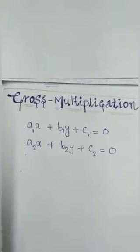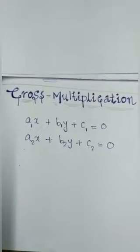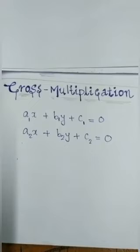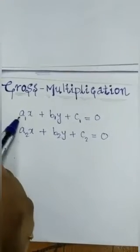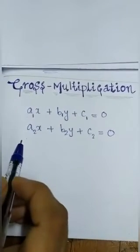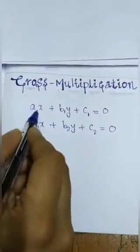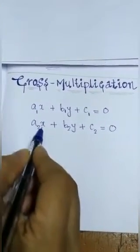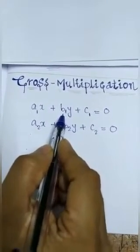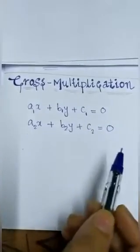Let's discuss the cross multiplication method used to find the solutions for linear equations in two variables. First of all, we have a pair of linear equations. The coefficient of x in the first equation is a1 and in the second is a2. The coefficient of y is b1 and b2, and the constant terms are c1 and c2.